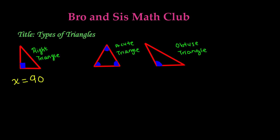Next we have an acute triangle, reminding us of an acute angle. An acute angle is always less than 90 degrees — it could be 89 degrees, 88 degrees, or even 3 degrees. In acute triangles, each of the angles is typically 60 degrees, because a triangle can only add up to 180 degrees. So 60 plus 60 plus 60 gives us 180 degrees. This is an example of an acute triangle — it has 3 acute angles.